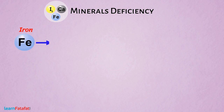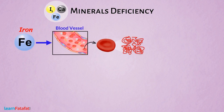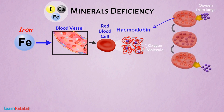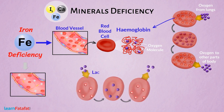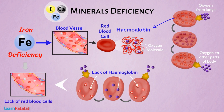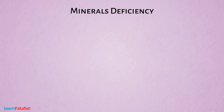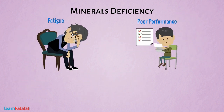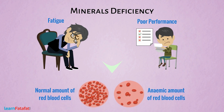Iron is necessary for making a protein called hemoglobin in red blood cells. Hemoglobin helps in carrying oxygen from the lungs to other parts of the body. Deficiency of iron results in lack of hemoglobin and therefore lack of red blood cells. It causes poor absorption of oxygen, which leads to fatigue and poor performance in work or school, often leading to a disease called anemia.